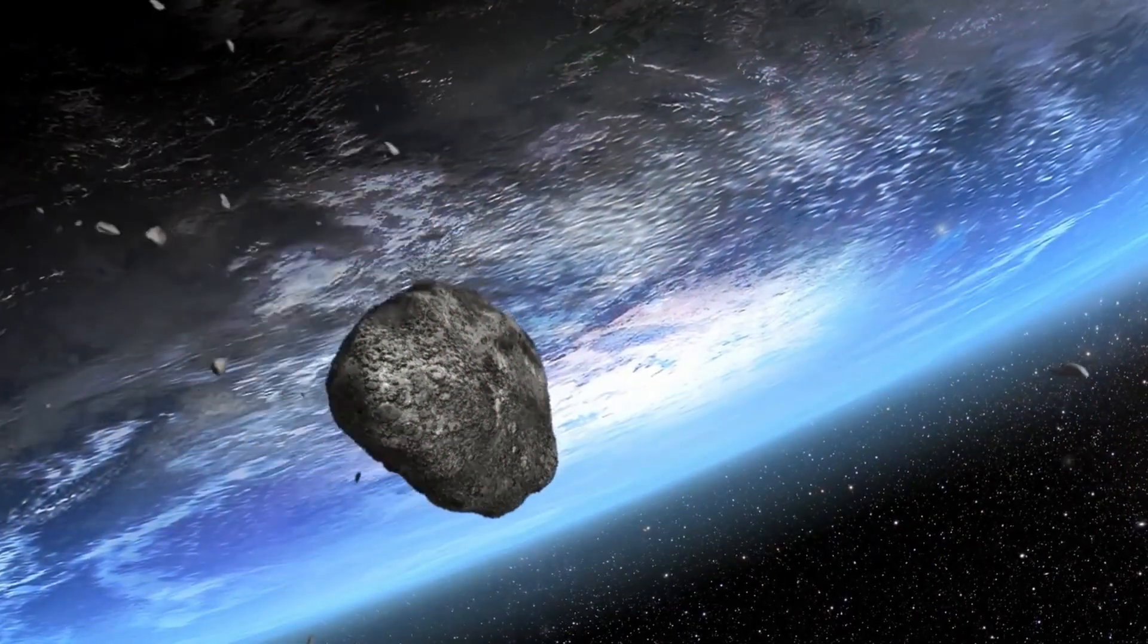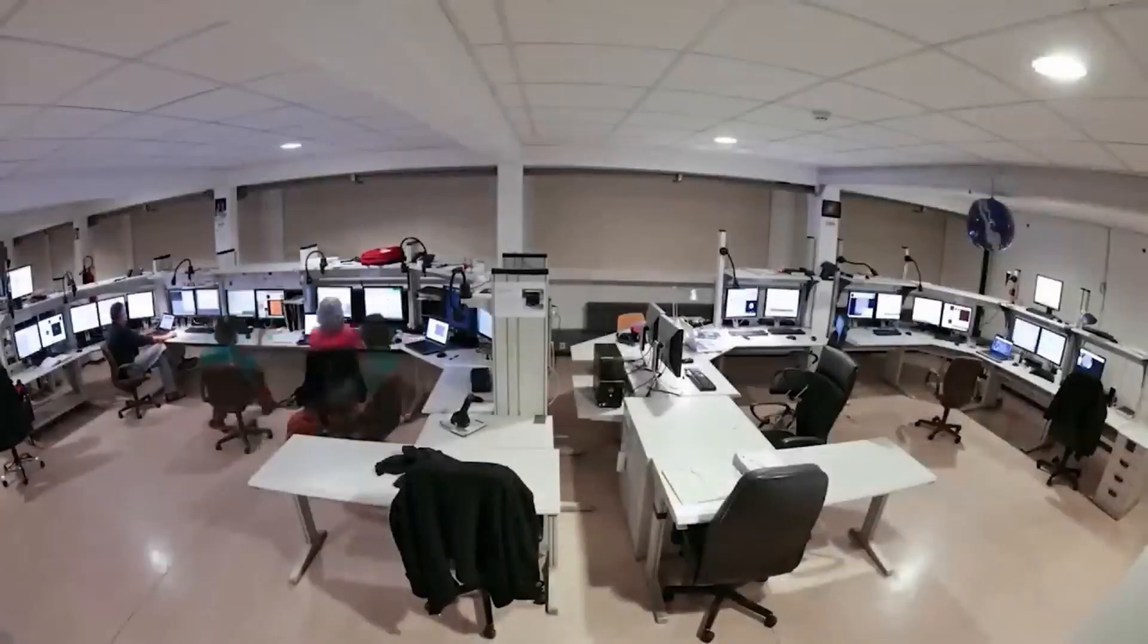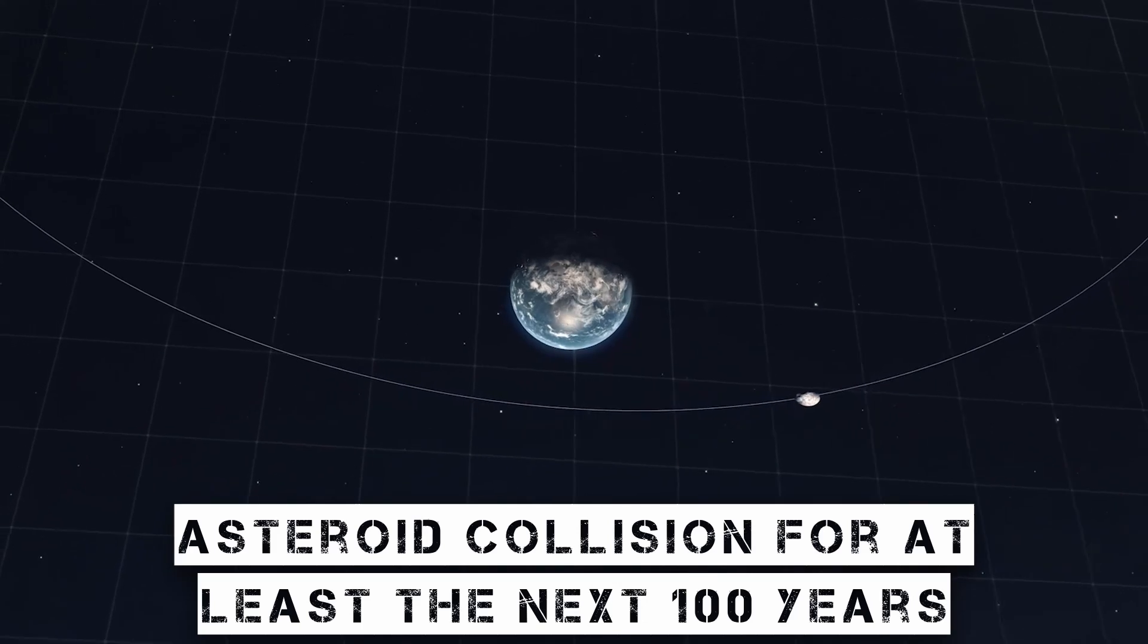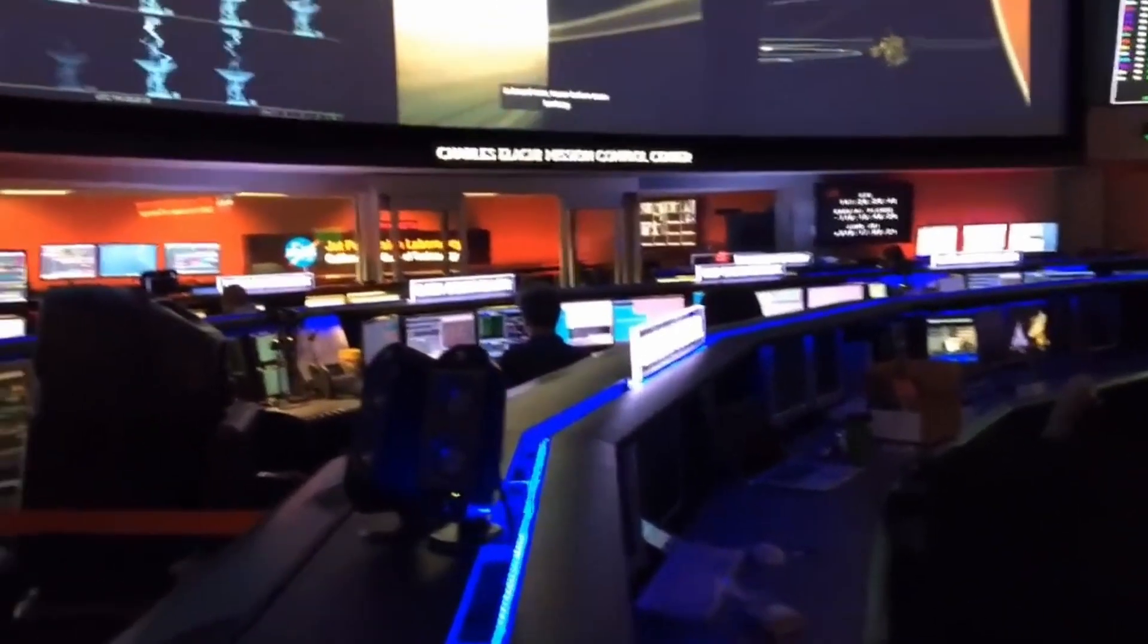All of the near-Earth object's projected trajectories to the end of the century have been calculated by NASA. According to NASA, there is no known threat to Earth from an end-of-the-world asteroid collision for at least the next hundred years. However, astronomers do not believe that they should give up their search.